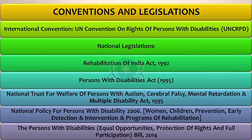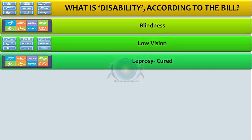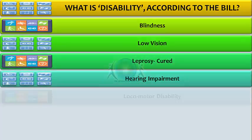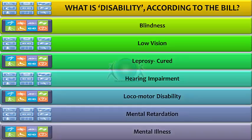We will discuss this bill particularly because it is supposed to be comprehensive and what it means to PWDs in India. According to the bill, disability has been defined as blindness, low vision, leprosy cured, hearing impairment, locomotor disability, mental retardation, and mental illness.